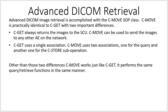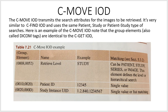C-GET uses a single association; C-MOVE uses two associations — one for the query and another for the C-STORE sub-operation. So it can be looking for images and, once it starts finding results, begin pulling them back. Other than those two differences, C-MOVE works just like C-GET. The C-MOVE IOD transmits the search attributes for images to be retrieved, using the same patient/study type of searches. The DICOM tags are identical to the C-GET IOD.